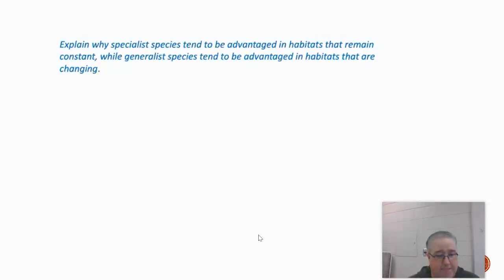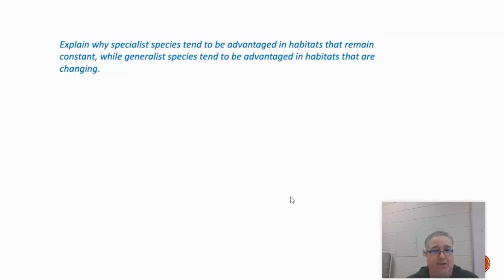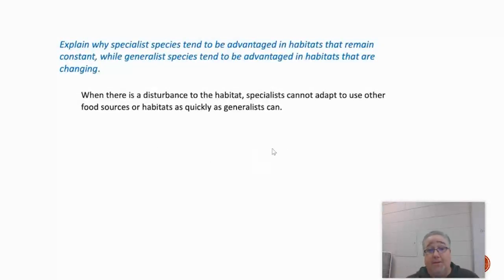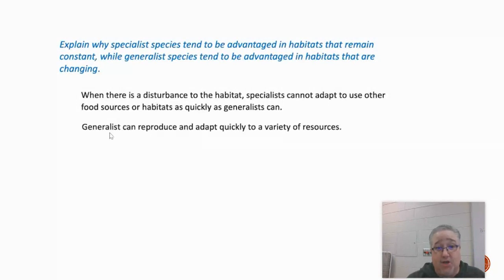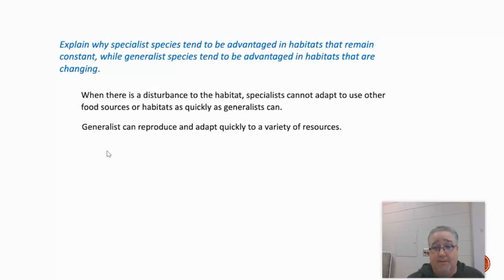Here are a couple of questions pulled from the AP Daily videos for this unit. Explain why specialist species tend to be advantaged in habitats that remain constant, and why generalist species tend to be advantaged in habitats that are changing. When there's a disturbance to the habitat, specialists cannot adapt — or have a lot of difficulty adapting — to use other food sources or resources as quickly as generalists can. Generalists can reproduce and adapt quickly to a variety of different resources, so if there is a change in the environment, the generalist is best equipped to adapt.